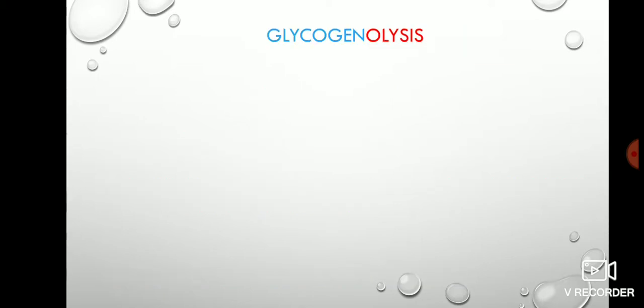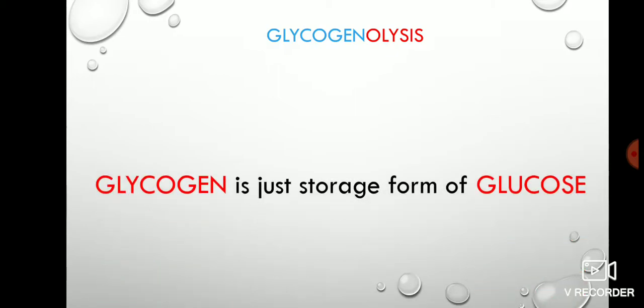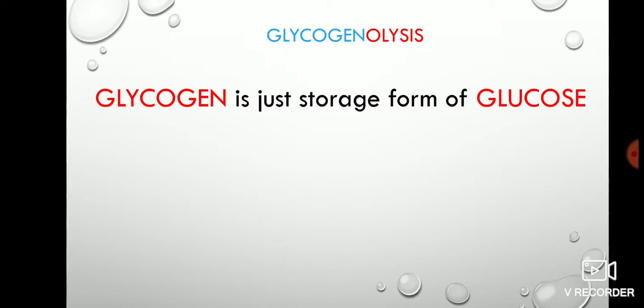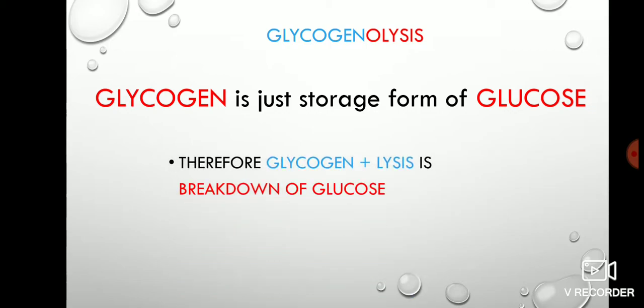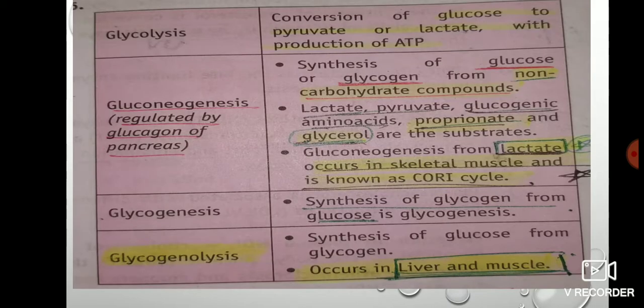Glycogenolysis — how do you remember this? Glycogen, as you may know, is the storage form of glucose in animals and humans, stored in the liver. In plants, cellulose is the storage form of glucose. Whenever you require energy — walking, running, any activity — the glycogen is released and there is breakdown of glucose, which you feel in your muscles. So simply: glycogen + lysis = breakdown of glycogen, i.e., glycogenolysis.